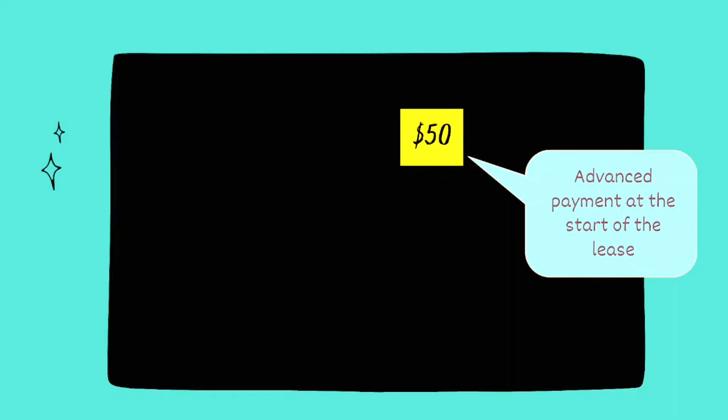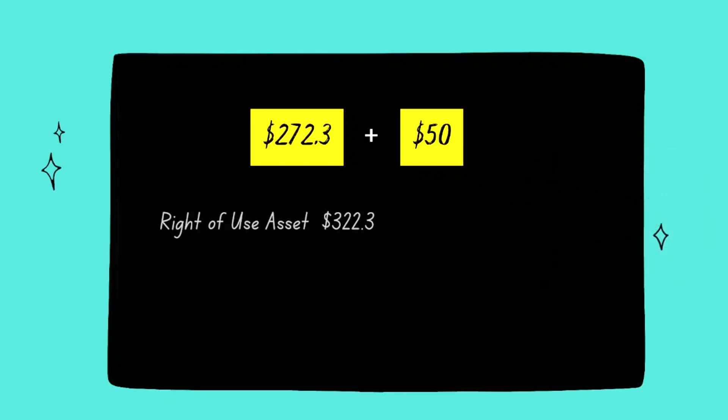This treatment is not unique to right-of-use assets — dismantling costs are added to any property, plant and equipment asset that is purchased. In our example, in addition to the lease liability, suppose we also made an advance payment of $50 at the start of the lease. The right-of-use asset would then be recognized at $272.3 (lease liability) plus $50 (advance payment), totaling $322.3. So we credit the lease liability by $272.3, debit the right-of-use asset by $322.3, and credit the bank by $50 for the advance payment.